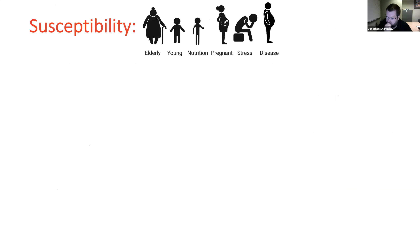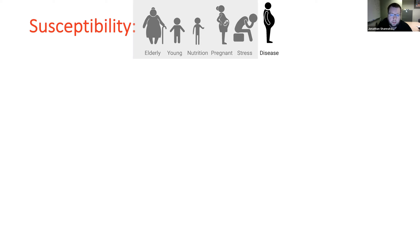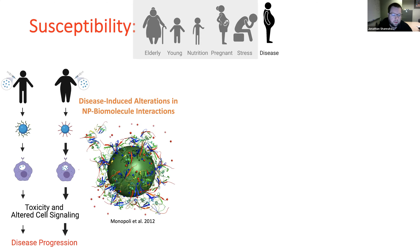Today's talk centers around the idea of susceptibility. Susceptible subpopulations include the elderly, the young, people with differential nutritional status, pregnancy, stress, and disease. Our research focuses primarily on the disease population due to prevalence, and we look at prevalent diseases throughout this talk. The first portion of our project examines the utilization of nanoparticles for biomedical applications.